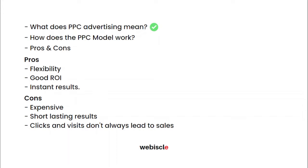To show up in the first position, the website owner bids on a certain set of keywords they want to rank for. If the bid is relatively high enough compared to competitors, the search engine places that website in the first position on the search results. The website that shows up first gets the most clicks, traffic, and impressions, and usually has higher conversion rates compared to websites ranking organically.